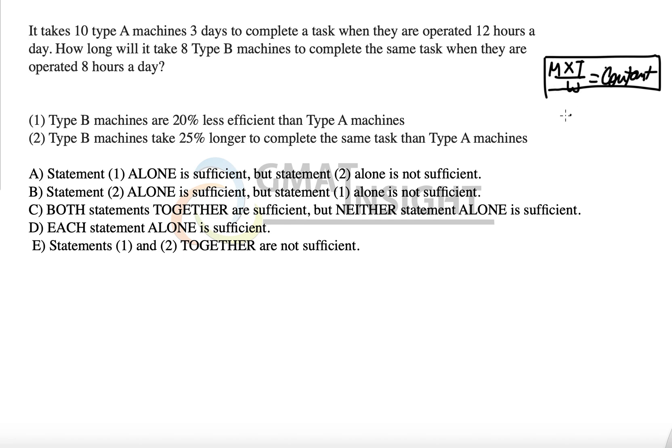Let me quickly explain where does it come from. Man is directly proportional to work and man is inversely proportional to time. So we can say man is proportional to work over time, and from there we get this expression that M into T upon W equal to constant, and I'm going to use this in the question.